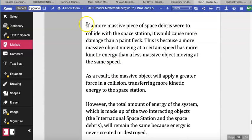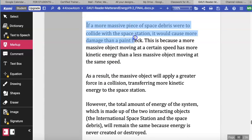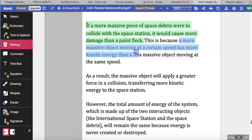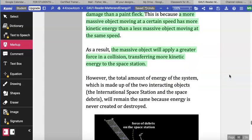If a more massive piece of space debris were to collide with the space station, it would cause more damage than a paint fleck. This is because a more massive object moving at a certain speed has more kinetic energy than a less massive object moving at the same speed. As a result, the massive object will apply a greater force in collision, transferring more kinetic energy to the space station.